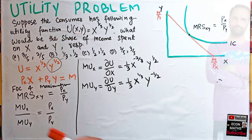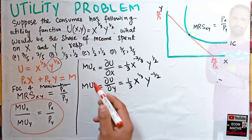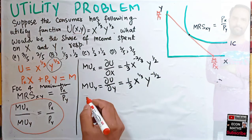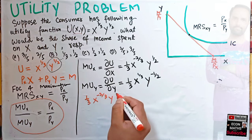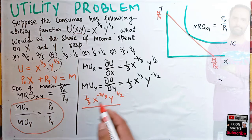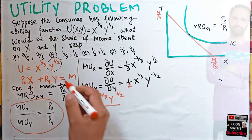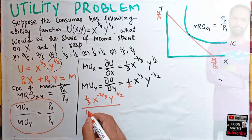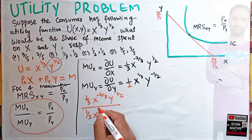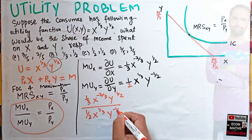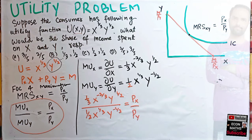Using the relation MU_x / MU_y = P_x / P_y, we substitute: [(1/3) · x^(-2/3) · y^(1/2)] divided by [(1/2) · x^(1/3) · y^(-1/2)] equals P_x / P_y.